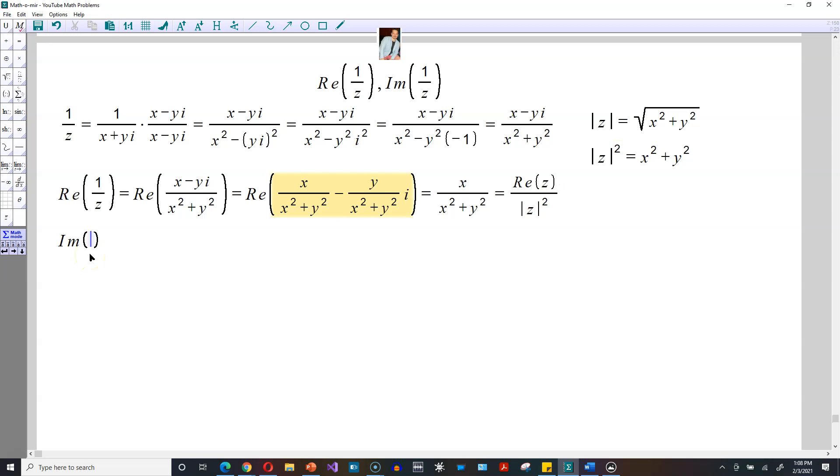Imaginary part of 1 divided by z works the same way. So it becomes the imaginary part of this expression, in other words, broken into two pieces. And then you just extract the part next to the i. So that would be the following: negative y divided by that x squared and then plus y squared.